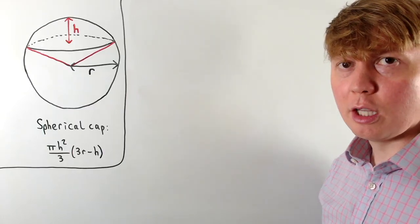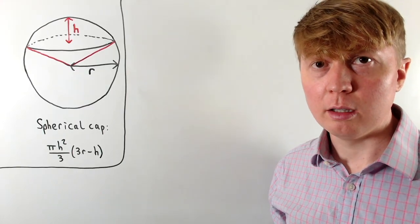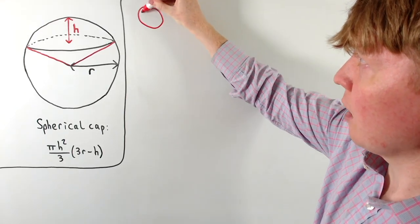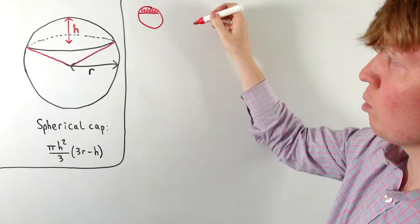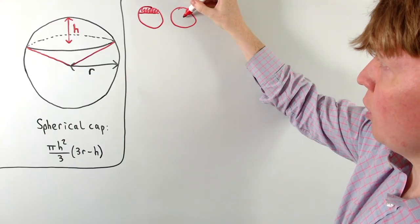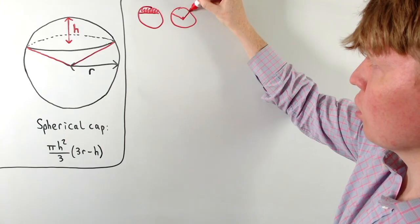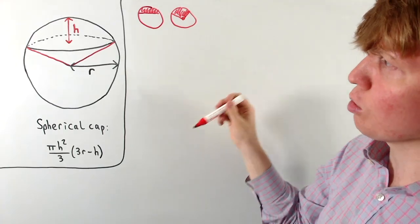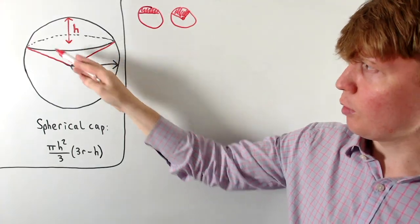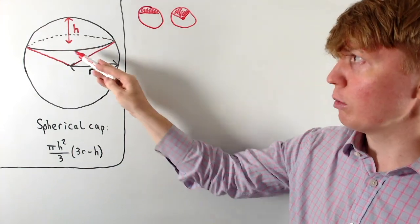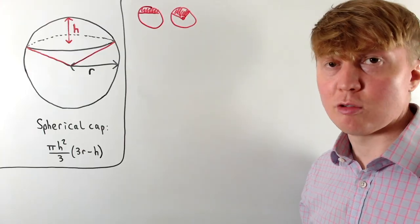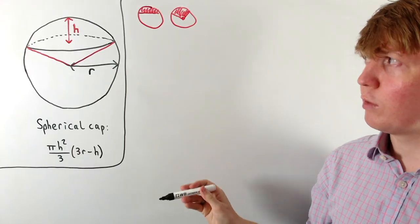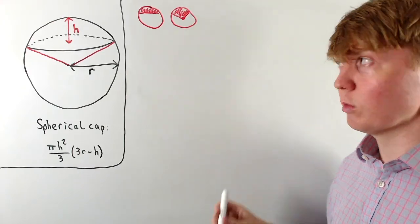This formula also lets us find the volume of a spherical sector. Analogous to 2D: a circle segment corresponds to our spherical cap, while a circle sector — which includes the segment plus everything going to the centre — corresponds to a spherical sector. Our spherical sector has the spherical cap on top plus a cone shape going down to the centre, so we just need to add the cone's volume.